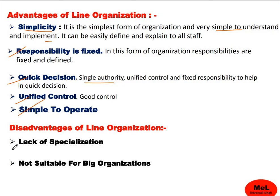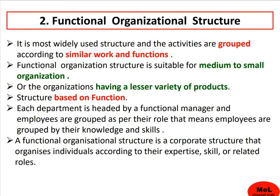The disadvantage is lack of specialization — there is no expert focus on specialization areas, and it is not suitable for big organizations. So this is your line organization complete. Next, the type is functional organizational structure, which we will see in another video. Thank you.